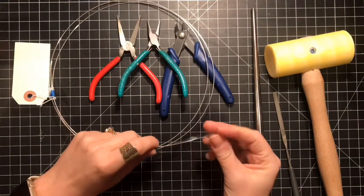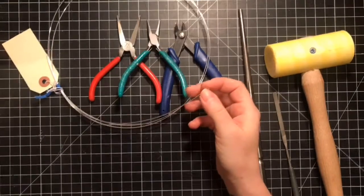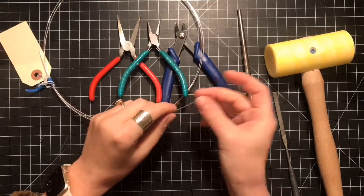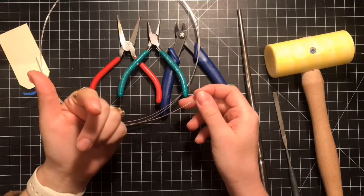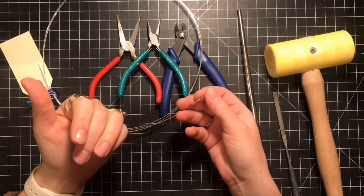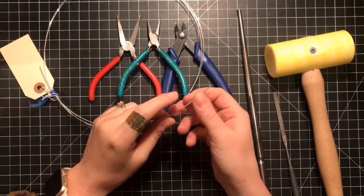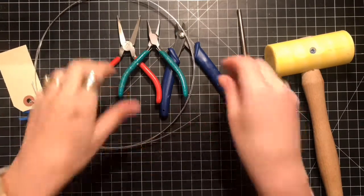I'm gonna do a ten millimeter one because this fits well in the conch piercing, and I'm going to find the circumference of a ten millimeter circle. What I do is take the ten millimeter diameter and times it by pi, so that would be around 30 millimeters.